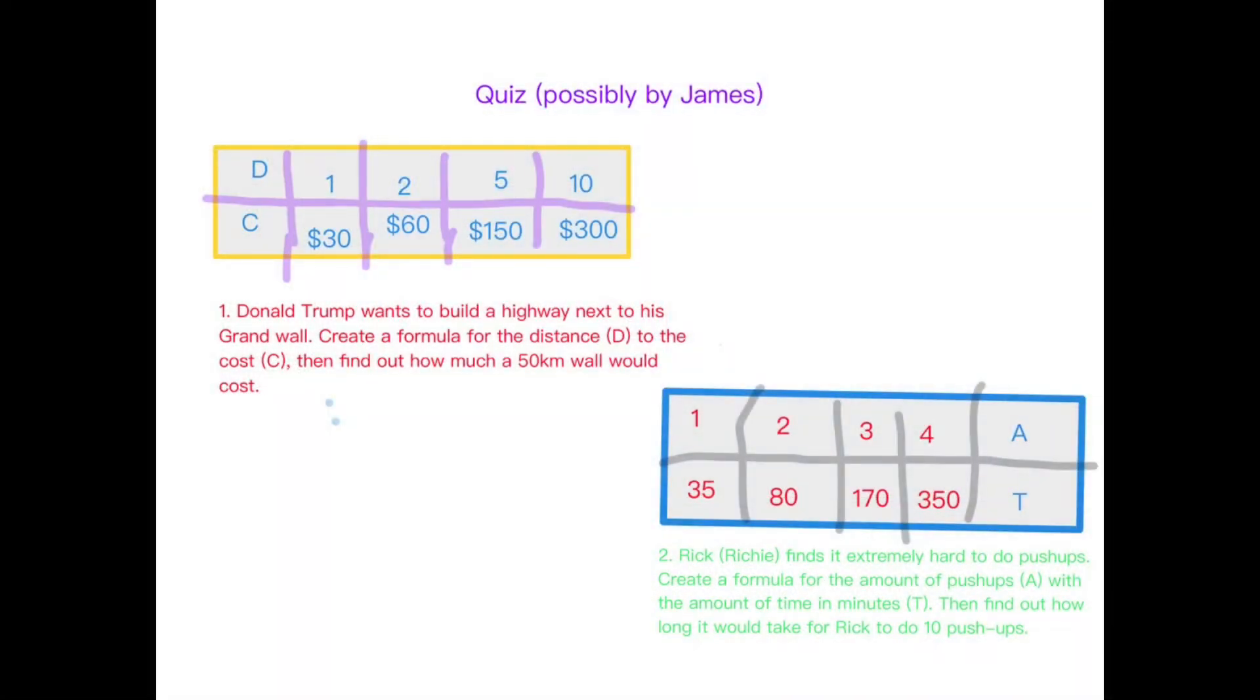Now it's time for the quiz. Question number one: Donald Trump wants to build a highway next to his grand wall. Create a formula for the distance d to the cost c, then find out how much a 50 kilometer wall would cost. Question number two: Rick finds it extremely hard to do push-ups. Create a formula for the amount of push-ups a with the amount of time in minutes t, then find out how long it will take for Rick to do 10 push-ups.